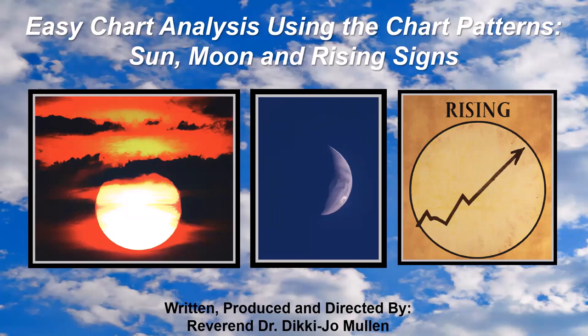Dr. Mullen demonstrates application of the chart patterns and the sun, moon, and rising signs using four examples of natal horoscopes: Jimmy Buffett, who has a locomotive chart pattern; Agatha Christie, a bowl pattern; Jack Kerouac, a seesaw pattern; and Helen Peters Noseworthy, the developer of the Ouija board, a splay pattern. Dr. Mullen will now explain and demonstrate the use of the seven chart patterns in association with the sun, moon, and rising sign in the natal chart.